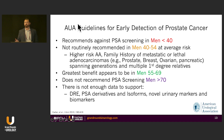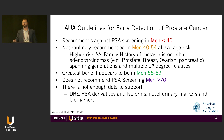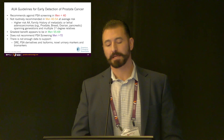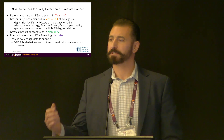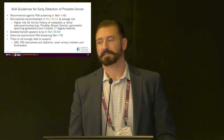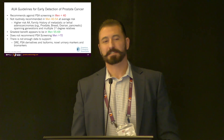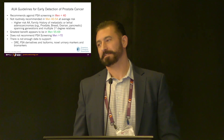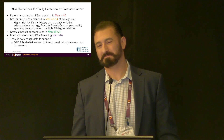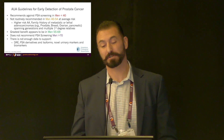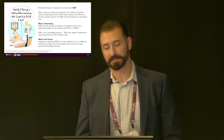The AUA guidelines say: don't screen men under 40; for ages 40 to 54 at average risk, you're probably fine. Higher risk — African Americans, family history — that should factor into whether you pull the trigger to screen. Greatest benefit is seen in men 55 to 69, but maybe we shouldn't screen men over 70. That's questionable — physiological age and chronological age differ. Some folks at 70 probably don't need it, but some at 80 probably should, because they have a lot of years left.